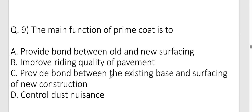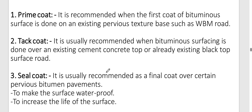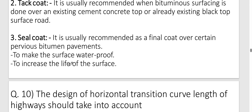Question nine: What is the main function of prime coat? Option C is correct — to provide bond between the existing base and surfacing of new construction. Prime coat is the first coat of bitumen applied on an existing granular base such as WBM roads. Tack coat is used when bituminous surfacing is done over existing cement concrete or black top surface. Seal coat is the final coat over bituminous pavement to increase water resistance and surface life.